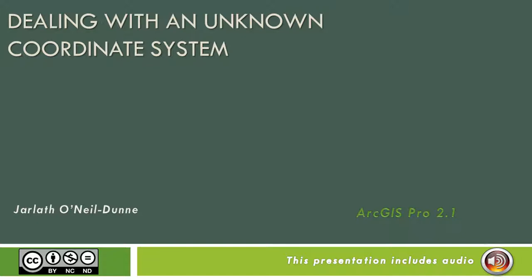In this video, we'll take a look at how to deal with a vector data set in which the coordinate system is unknown. This is extremely frustrating. An unknown coordinate system can be the result of the coordinate system being accidentally deleted, never defined in the first place, or perhaps lost during data conversion, such as moving from CAD to GIS.